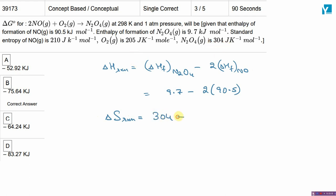N2O4 is 304 minus twice the molar entropy of NO, minus the molar entropy of O2.